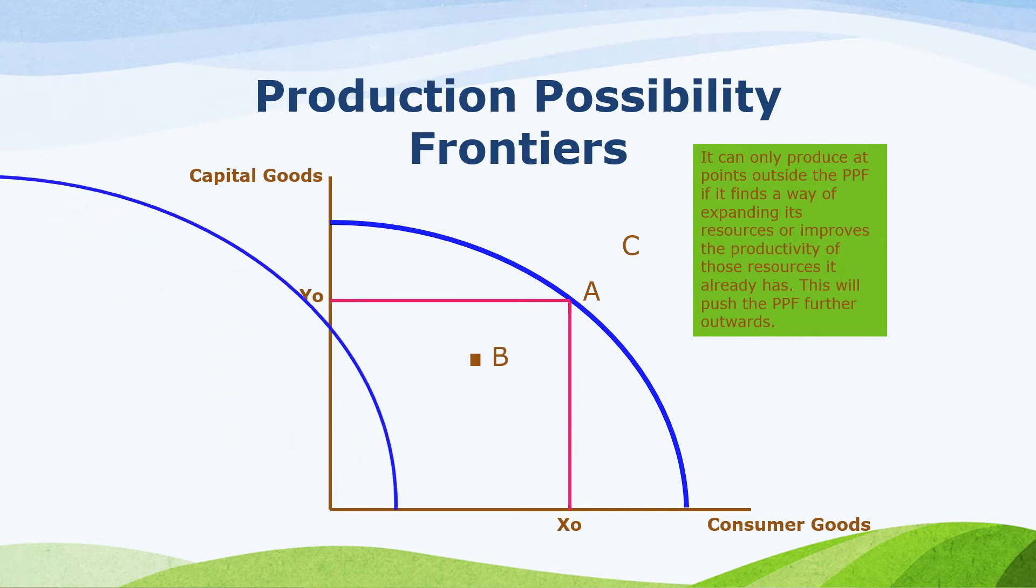It can only produce at points outside the PPF if it finds a way of expanding its resources or improves the productivity of those resources it already has. This will push the PPF further outwards.